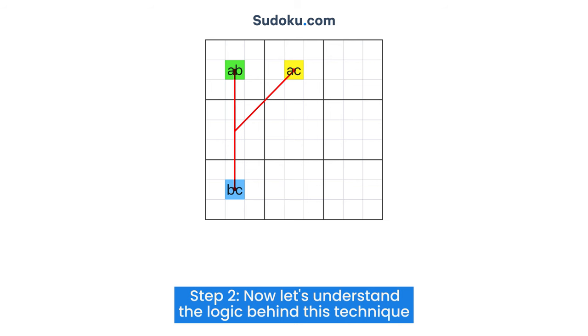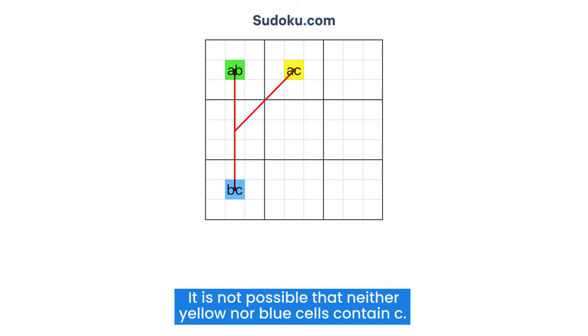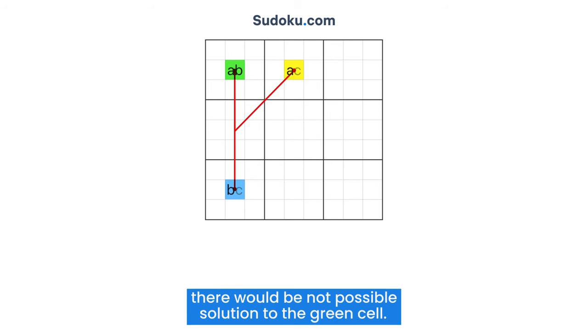Step 2: Now let's understand the logic behind this technique. While the green cell could contain either A or B, yellow and blue cells must contain C. It is not possible that neither yellow nor blue cells contain C. This is because if yellow cell contained A and blue contained B, then by the rules of Sudoku, there would be no possible solution to the green cell.